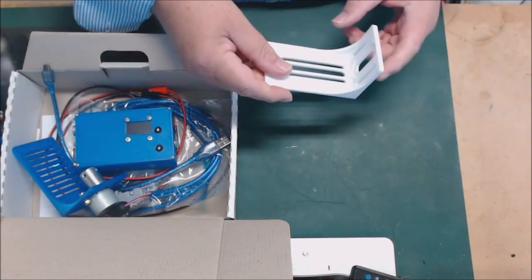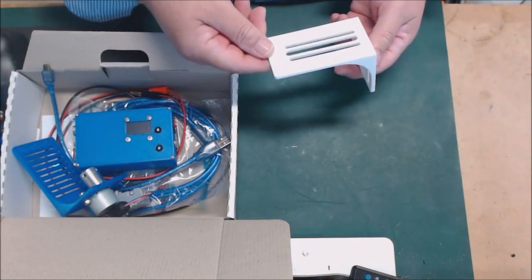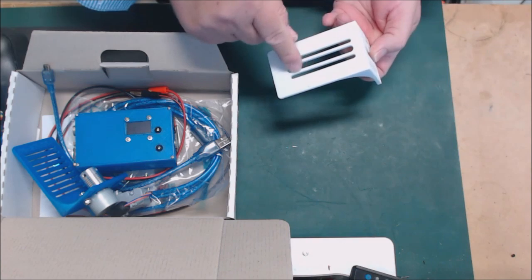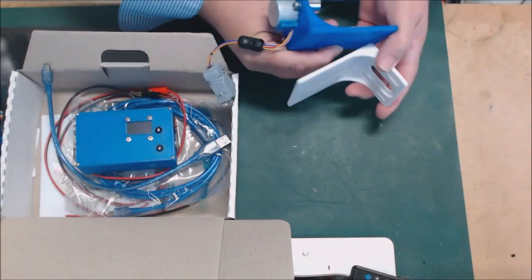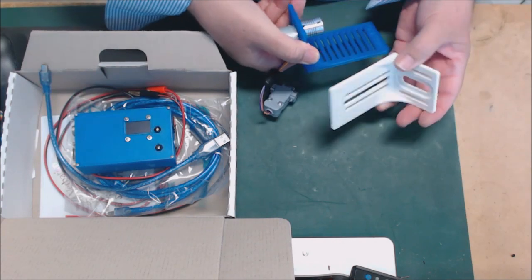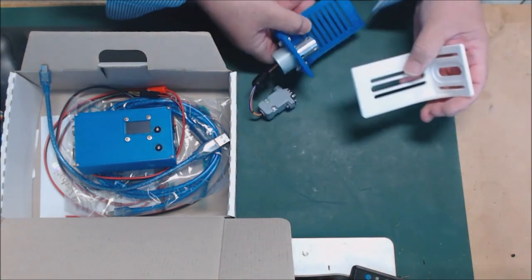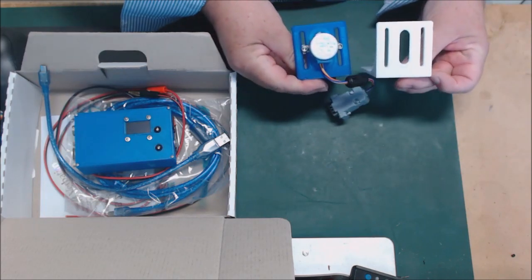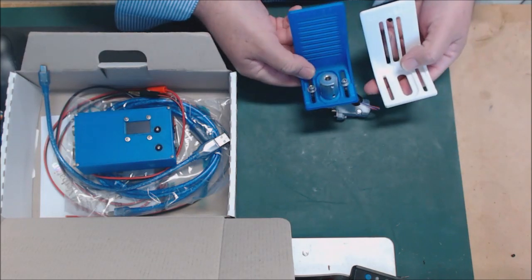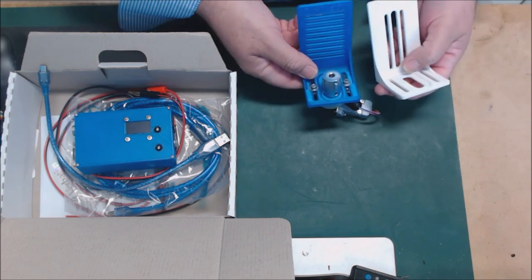We've got two different types or designs of brackets: one with slots this way and the other one, this one, with slots the other way. In both of them you can adjust the height of the stepper motor up and down so that it connects properly with the focuser shaft.